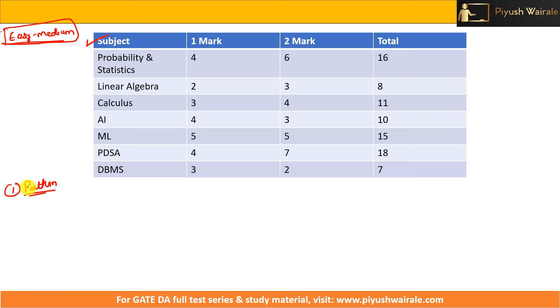We all know that 15 marks are for aptitude and 85 marks are for the technical syllabus — the GATE DA technical syllabus. This is the distribution of those subjects, and we are going to discuss it in detail.